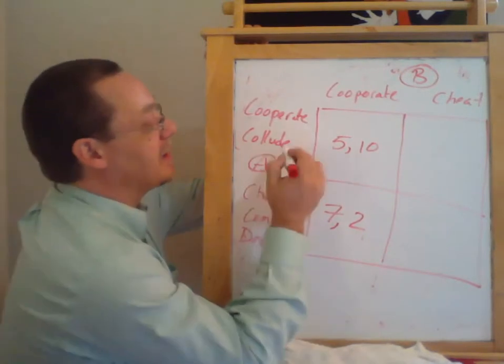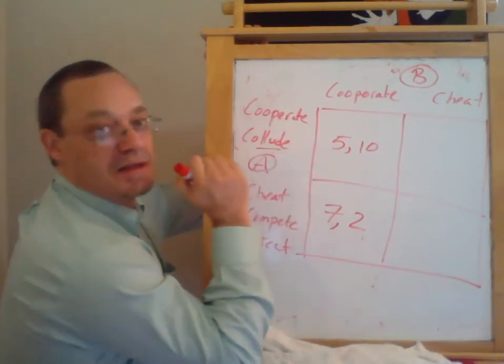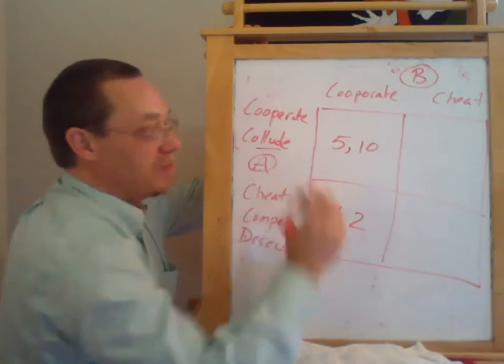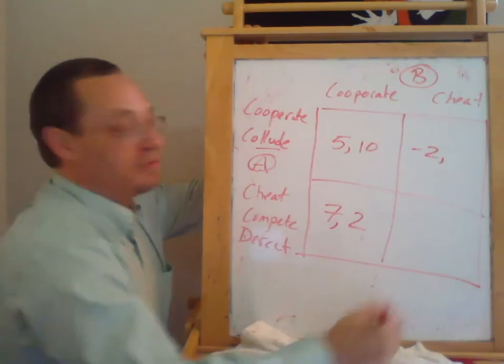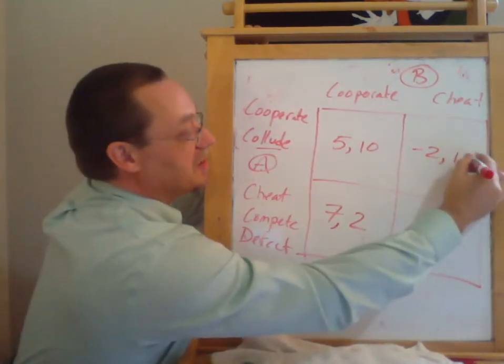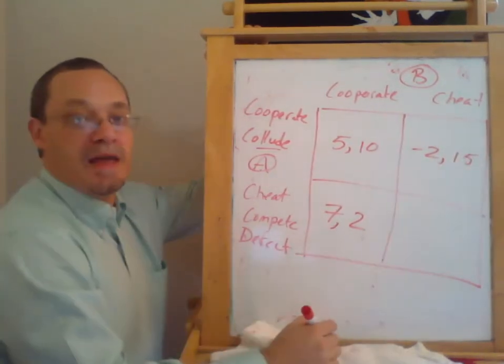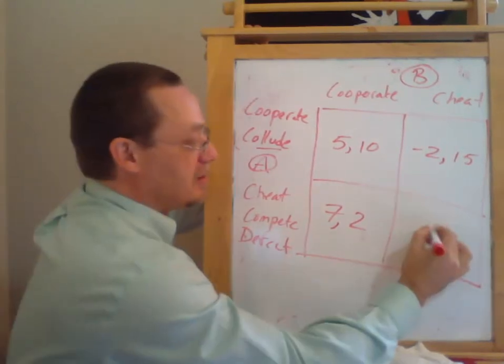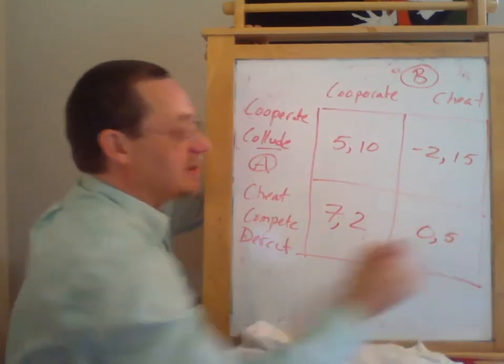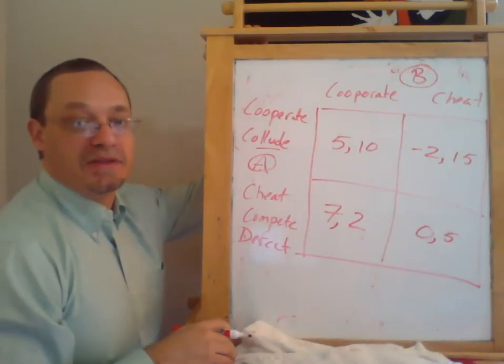On the other hand, if Firm A is a team player and Firm B cheats on them, then Firm A makes losses of two and Firm B gets profits of 15. And if they both cheat on each other and compete really hard, then Firm A gets no profits and Firm B gets profits of five.